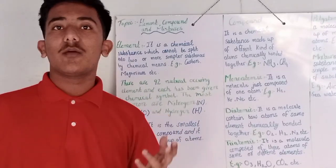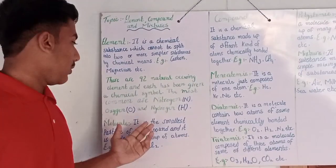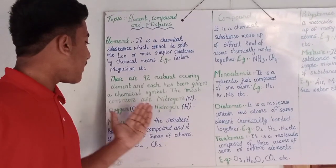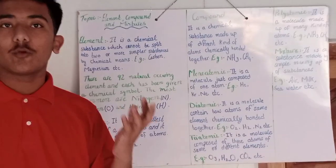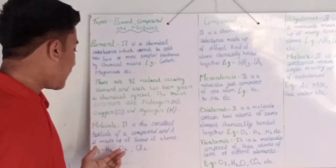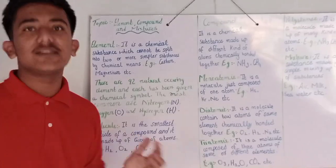Now I will tell you about the definition of molecule. Molecule, it is the smallest particle of a compound and it is made up of a group of atoms. For example, H2, O2, and Cl2.